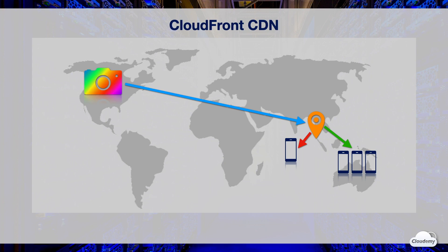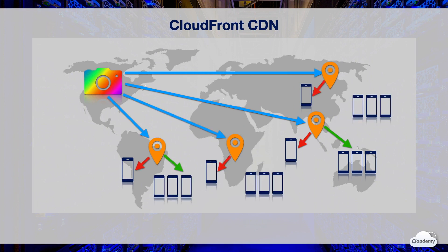These contents will be cached in the edge location for the time you specify. This time is called Time to Live, or TTL. When the TTL expires, CloudFront will forward the request to the origin to determine whether the content has been updated. If the content in the origin has been updated, CloudFront will clear the cache in the edge location and fetch the latest version. You can also manually force CloudFront to clear the cache, however you will be charged for manual cache clearing. The same mechanism works in other locations as well.